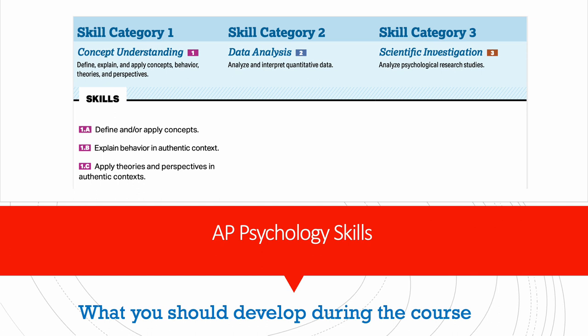The skills you would develop during this course fall into three main categories. First, concept understanding, where you define, explain and apply concepts, behavior theories and perspectives. It entails defining or applying concepts — there are so many concepts, terms and definitions that we will first learn them, define them, and then apply them to scenarios. As we learn how to solve free response questions, we would explain behavior in authentic contexts and apply theories and perspectives in scenario settings, experiments and research examples.